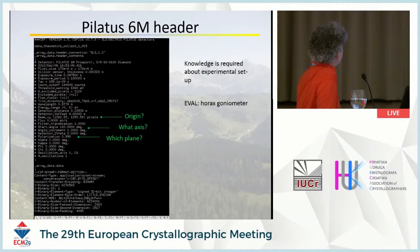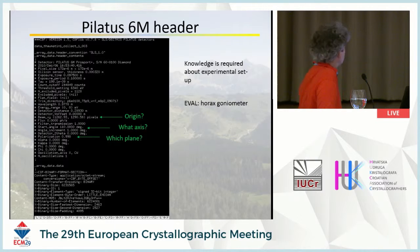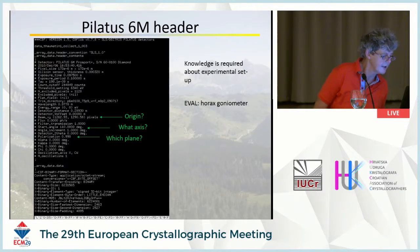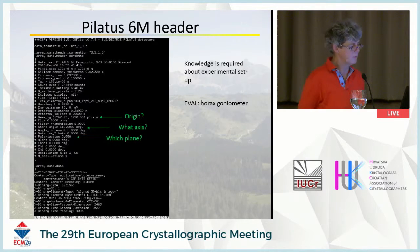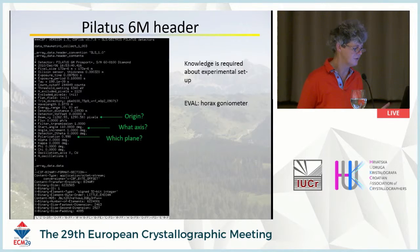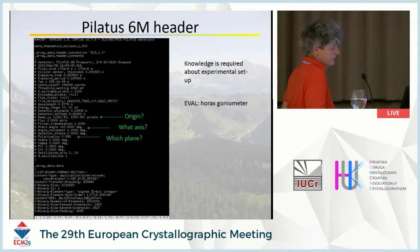This is a Pilatus 6M header. Pilatus uses a mini-CBF format — simply an ASCII header ignoring all the possibilities of imgCIF. It gives beam xi in pixel coordinates but it's not clear where the origin is. There is a starting angle — 110 degrees — but it's not stated which axis it refers to. There is polarization listed but not which plane, and the goniometer type is inferred by EVAL to be a horizontal-axis goniometer, which is normally the case at synchrotrons.